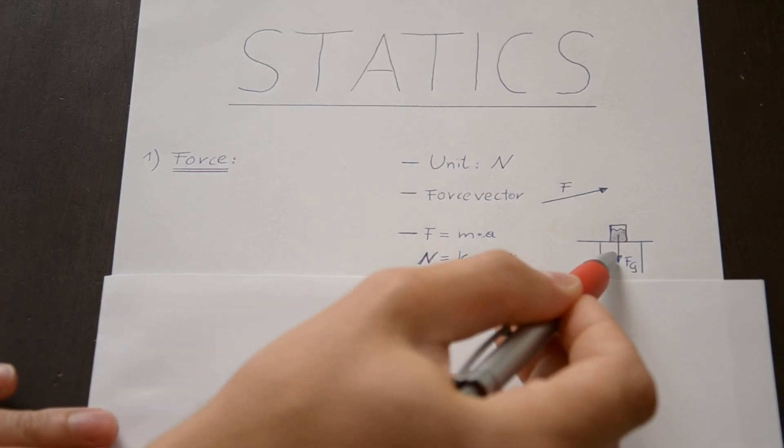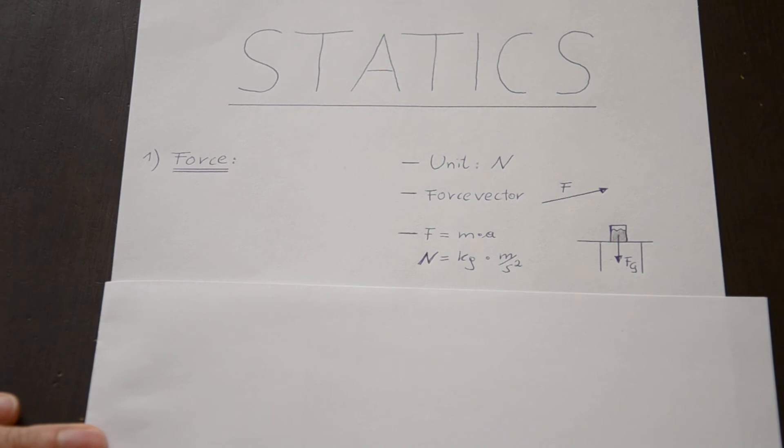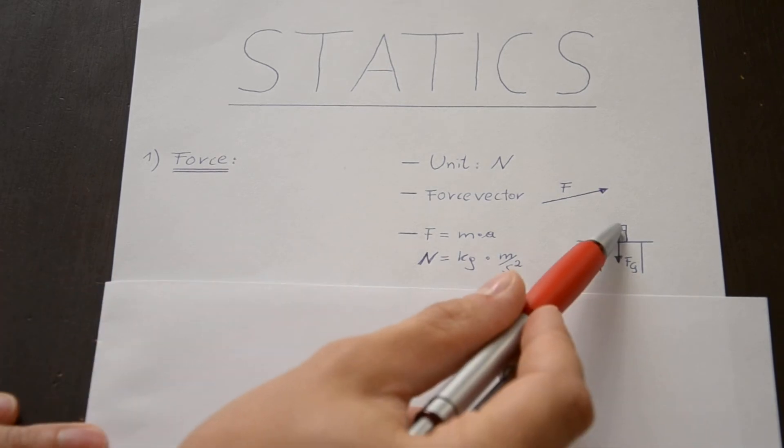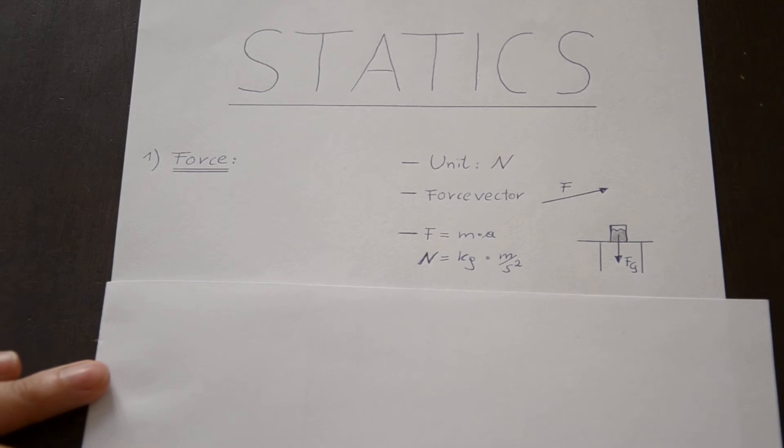So physical laws tell us that the weight force must always point at the surface of the earth. It would be wrong to change the direction of the weight force vector so that it is pointing at heaven, because this would mean that the mass would fly, which obviously is not possible, at least not without any additional forces acting on the mass.